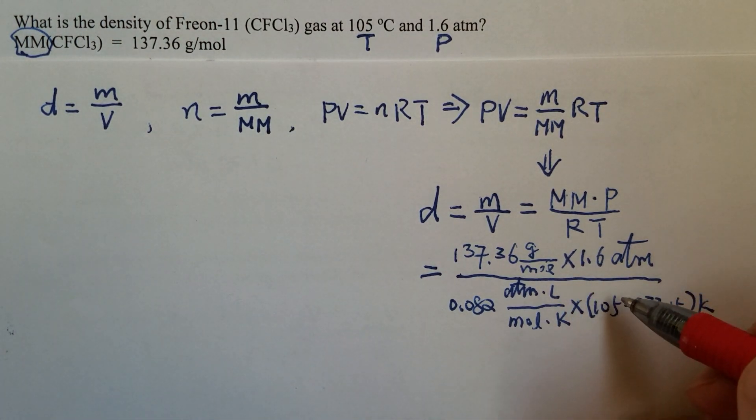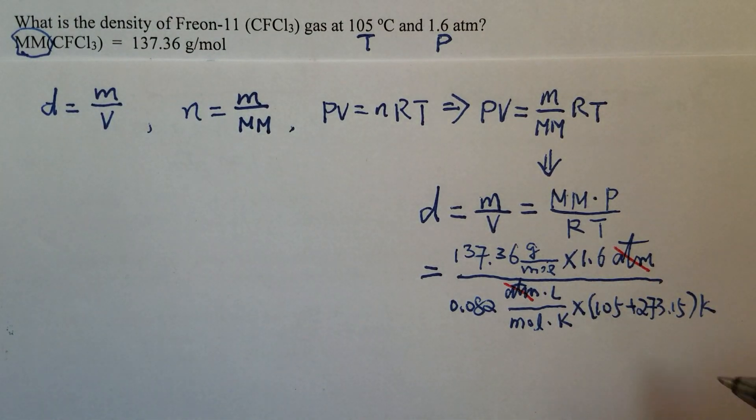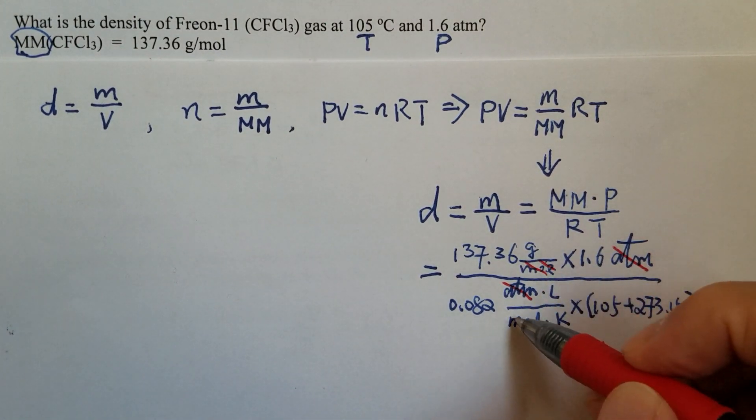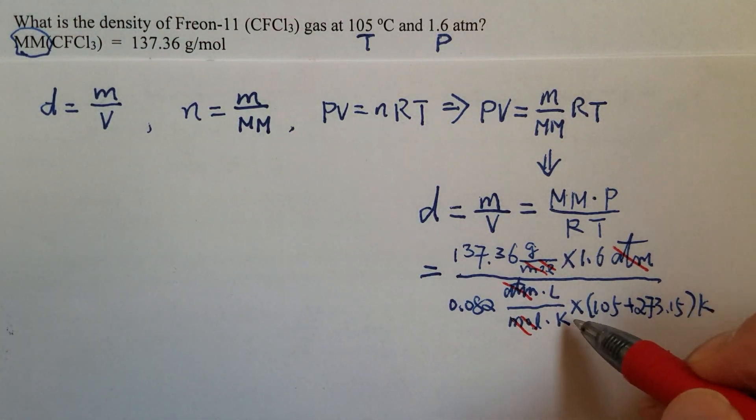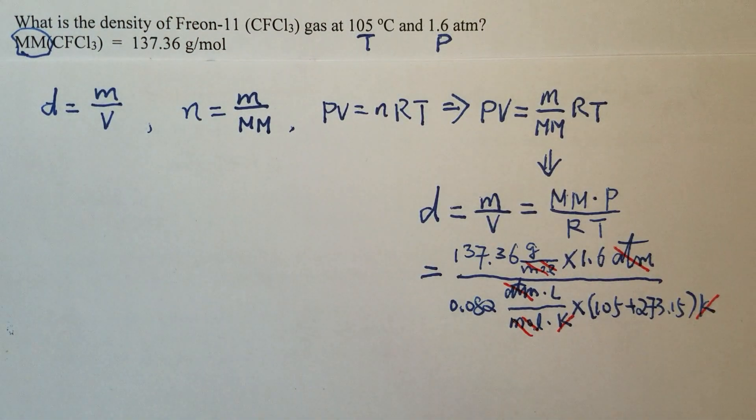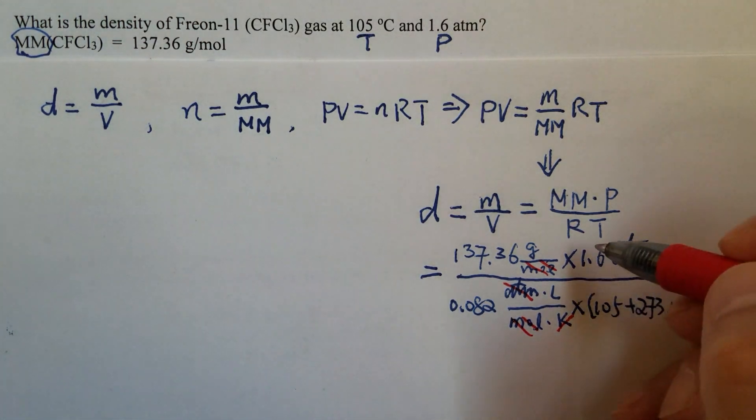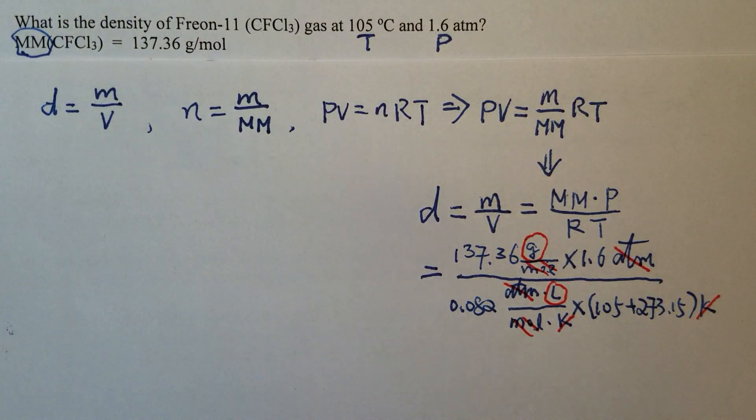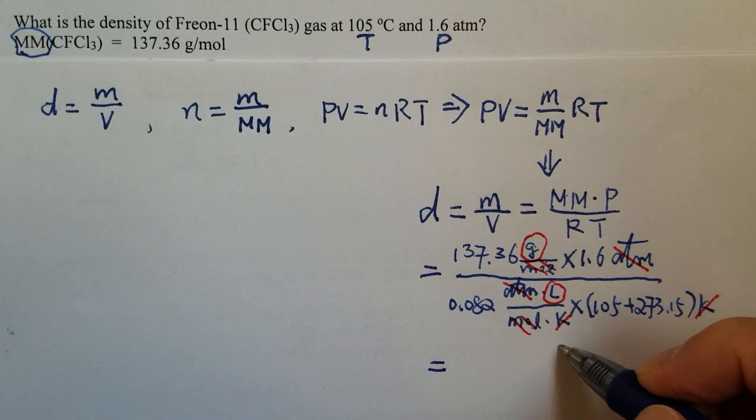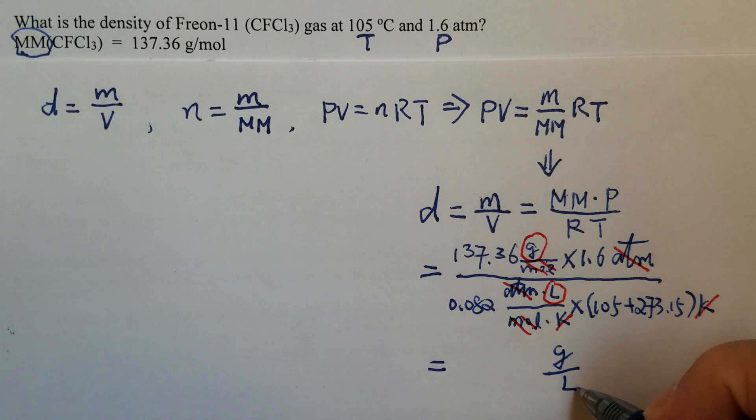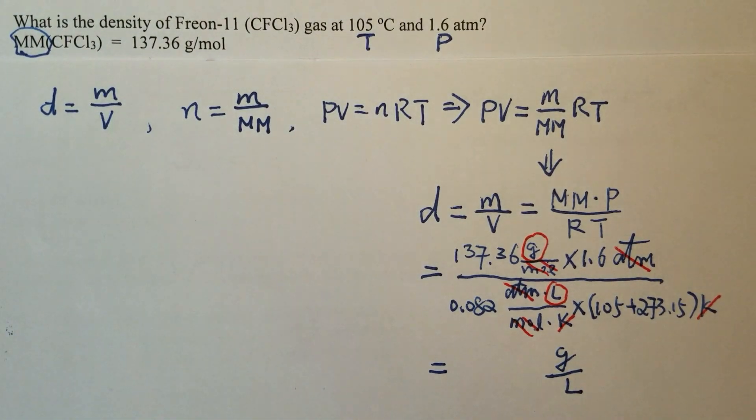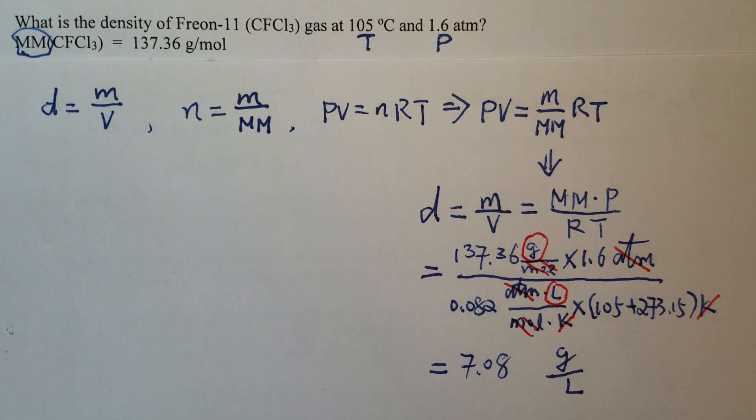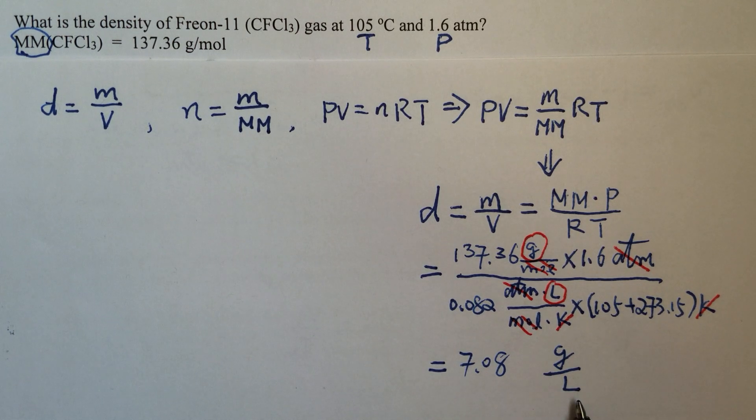So let's look at those units. Atmosphere is cancelled, moles cancelled, Kelvin cancelled. So what I have left is grams over liter. Grams per liter. That's the density.